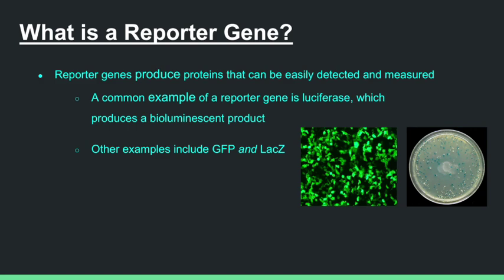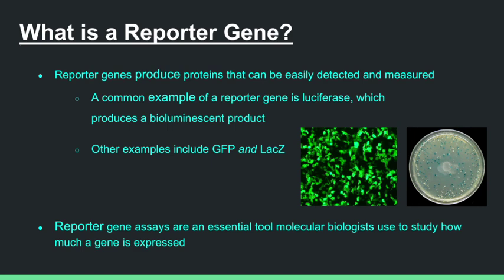After deciding on what reporter you are going to use, you would then clone your promoter into the multiple cloning site of a plasmid containing the reporter gene. Now, the reporter gene is under the control of your gene of interest promoter. By then measuring the activity of the reporter gene product, you can determine the promoter's effect on transcription.